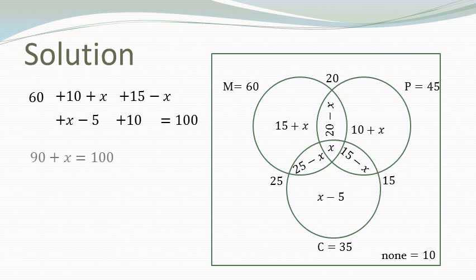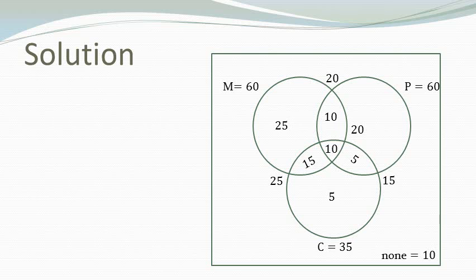When we add all these we get 90 plus x is equal to 100, and therefore x is 10. So knowing the value of x we can now find out the values for all the regions. So this is what we get.